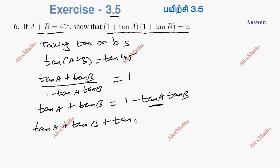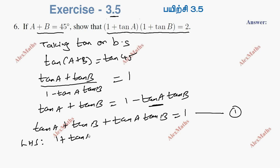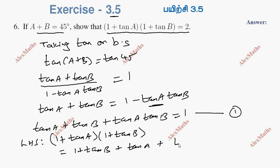Adding 1 to both sides and rearranging: if we expand 1 plus tan a into 1 plus tan b, we get 1 plus tan b plus tan a plus tan a·tan b.